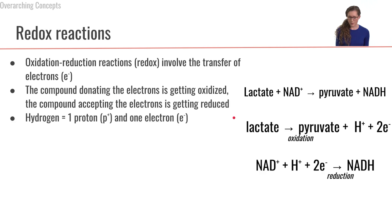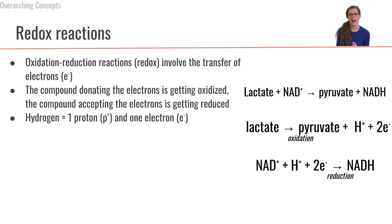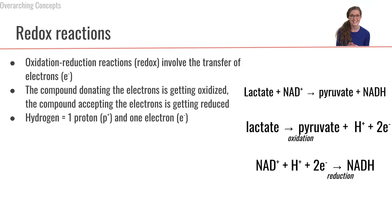When talking about redox reactions in metabolism, we can focus on following the hydrogen. Remember that a hydrogen is composed of one proton and one electron. So when looking at redox reactions, if we follow the hydrogen, that tells us where the electron is going and clues us in that a redox reaction is happening. Whichever compound is accepting the hydrogen is getting reduced, whereas the compound that is losing the hydrogen is getting oxidized.